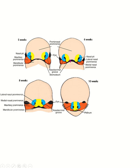The frontonasal prominence is divided into two parts: the medial nasal prominence and the lateral nasal prominence, around the nasal pit. So there are two medial nasal prominences and two lateral nasal prominences. Soon the two medial nasal prominences close with each other. And there is a gap between the lateral nasal prominence and maxillary prominence, and this gap is known as the nasolacrimal groove.